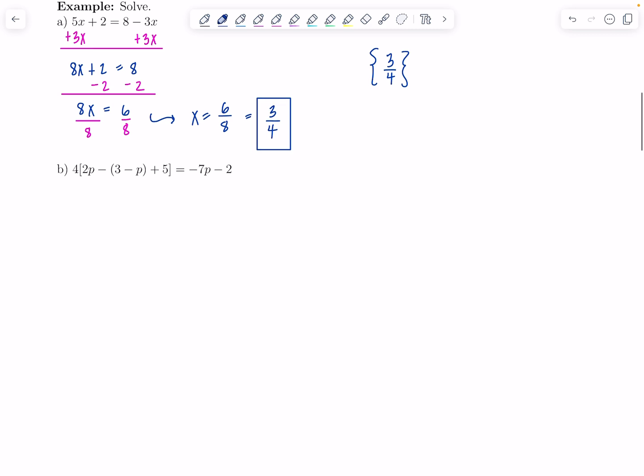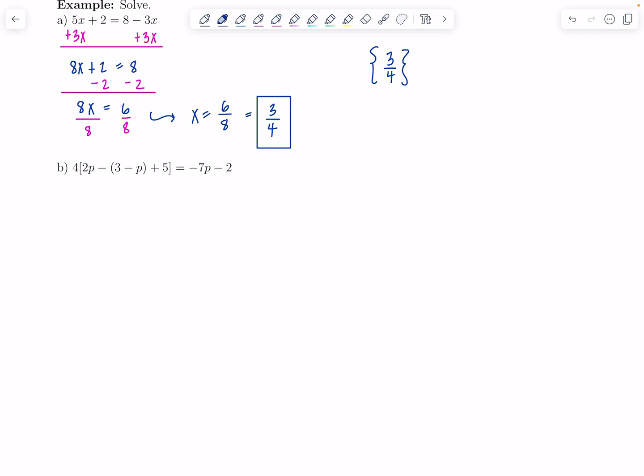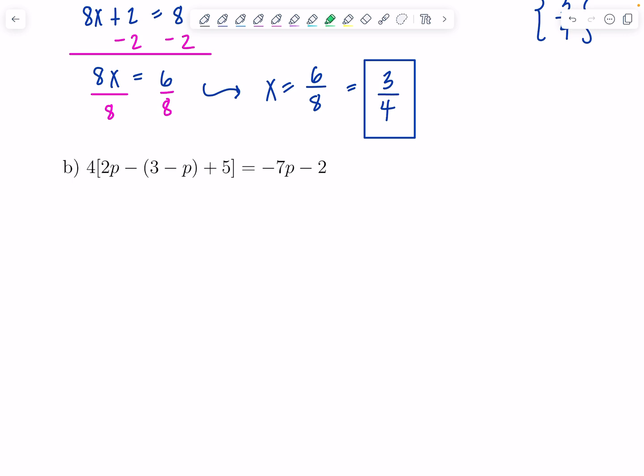We have 4 times 2p minus quantity 3 minus p plus 5 equals negative 7p minus 2. First we've got to just clean this mess up. Call the cleanup crew and get inside those brackets cleaned up. I'm going to still write the 4 out here, and then I'm going to have 2p minus 3 plus p plus 5 equals negative 7p minus 2. Make sure you write down everything every step of the way.